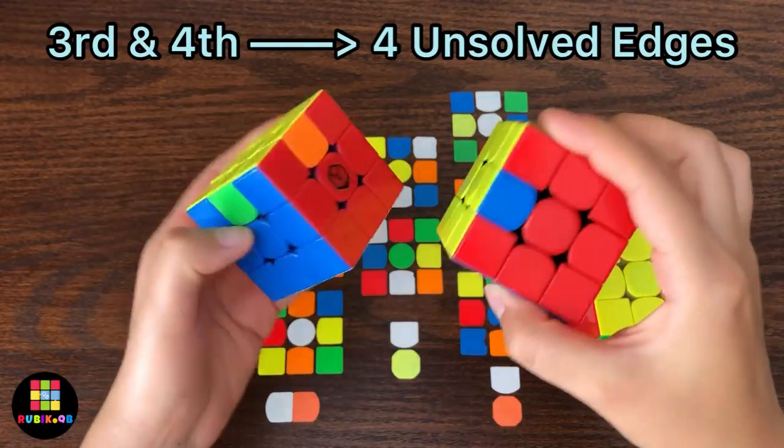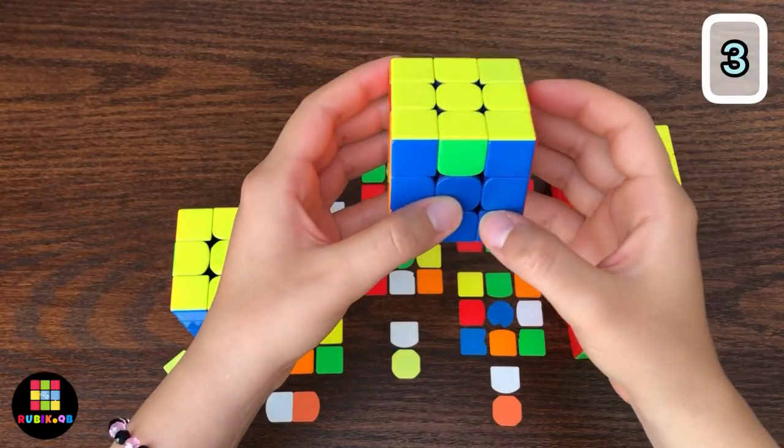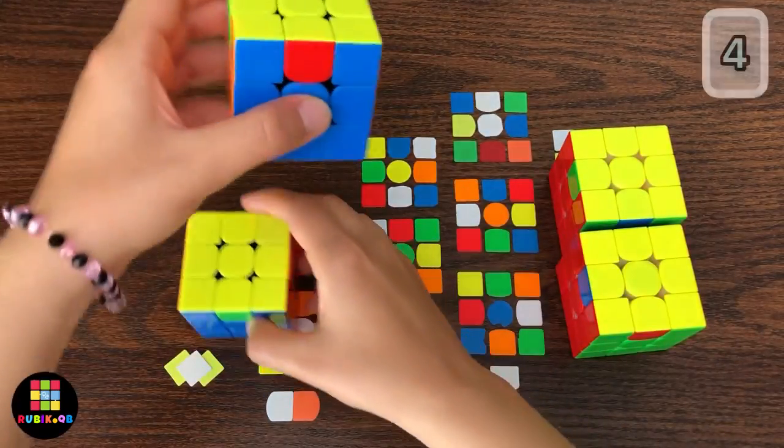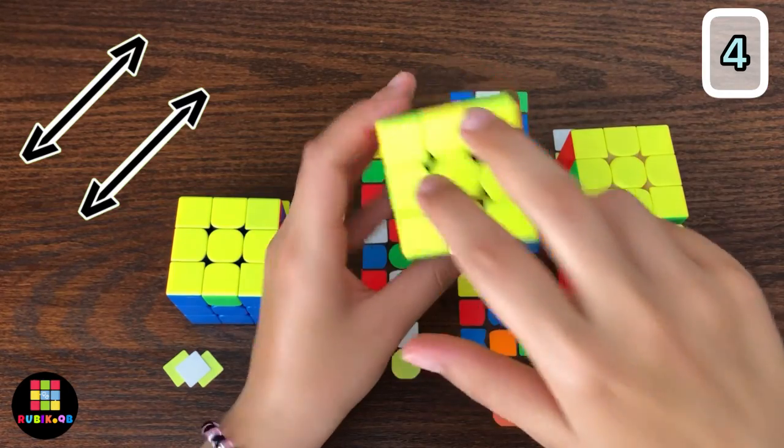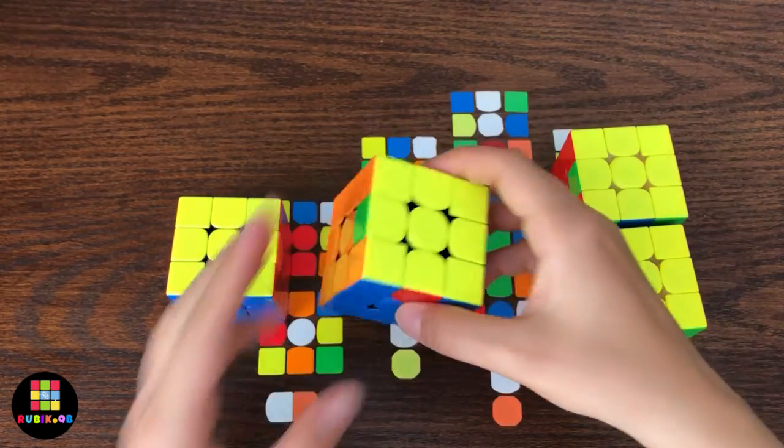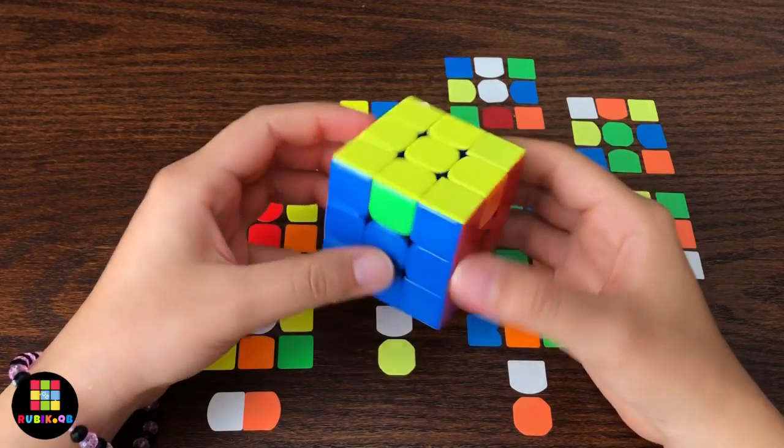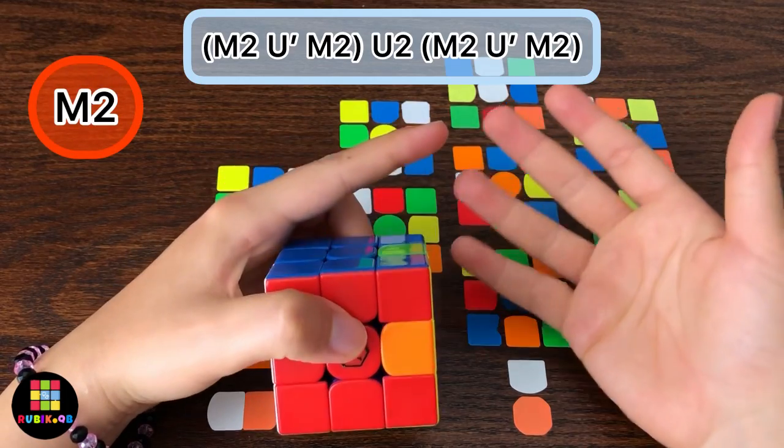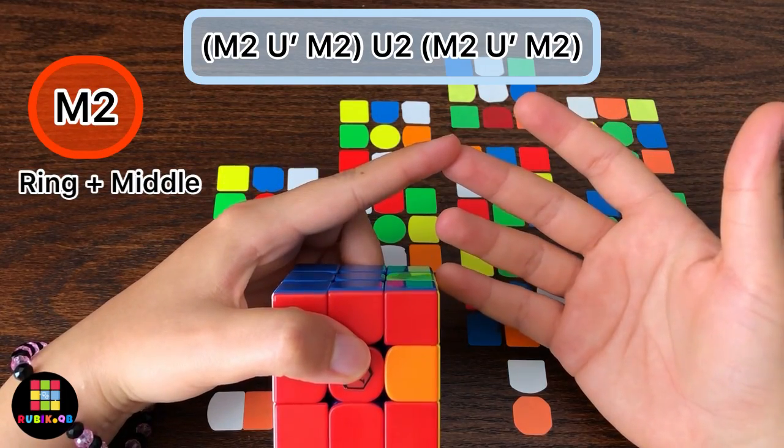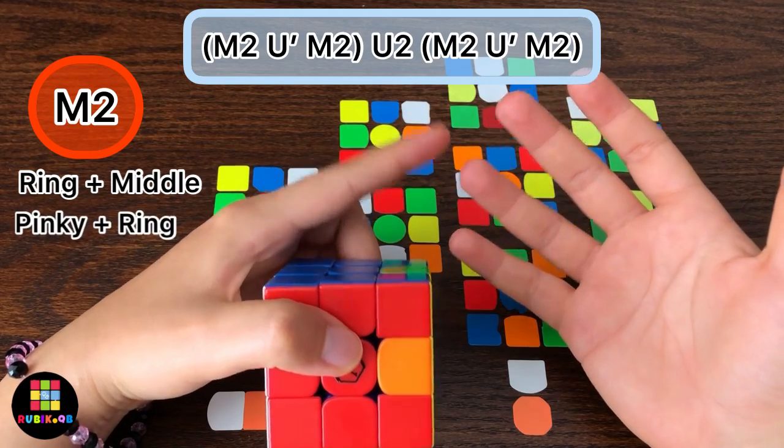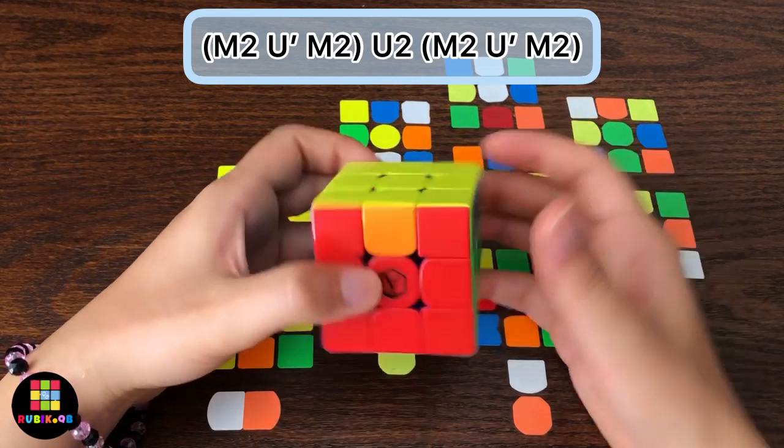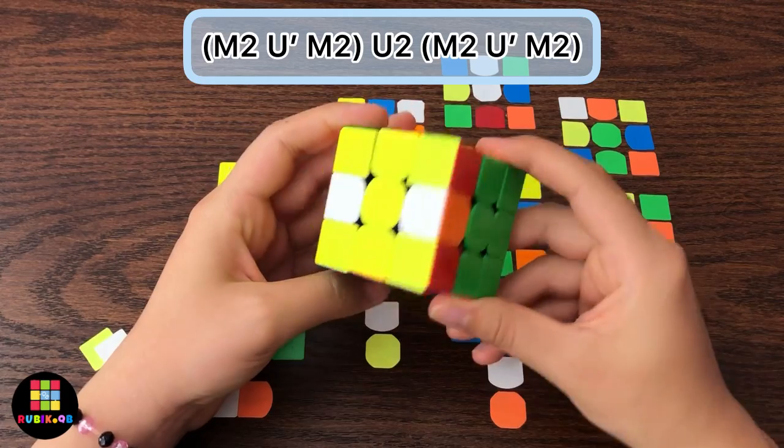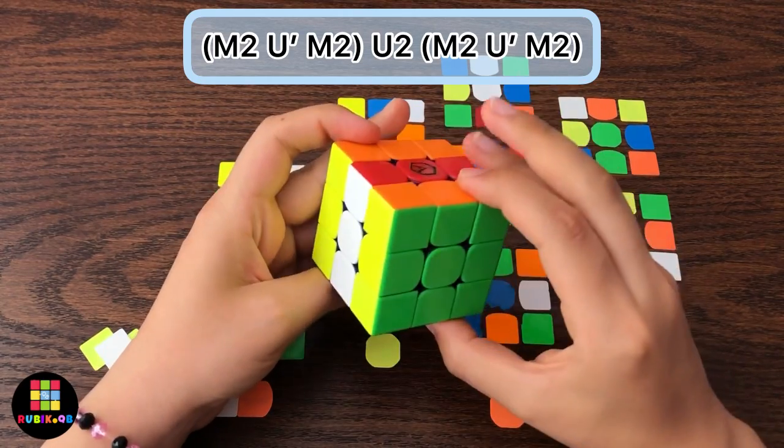For the third and the fourth case, all of the edges are unsolved. For this one, the edges that are opposite to another need to swap. For this case, hold the cube whatever you like and then do the algorithm. For doing M2, I use my ring finger and my middle finger afterwards, but I saw some cubers use their pinky and their ring finger afterwards, so pick whichever is easier for you. Alright let's get to the algorithm: do M2 U' M2 U2 M2 U' M2.